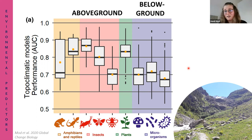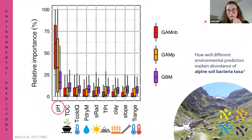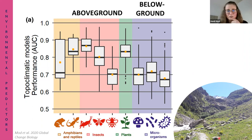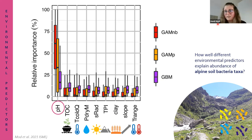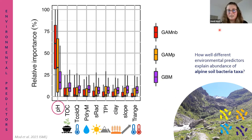When building an SDM or any spatial model for soil microorganisms, we need to pay attention to data availability and be aware that not all data we want or should use may be available. In the next study, we knew from prior research that soil properties would influence soil bacteria, so this time we added soil predictors in addition to climatic and topographic variables, and tested how well these different predictors explain abundance of alpine soil bacteria taxa.